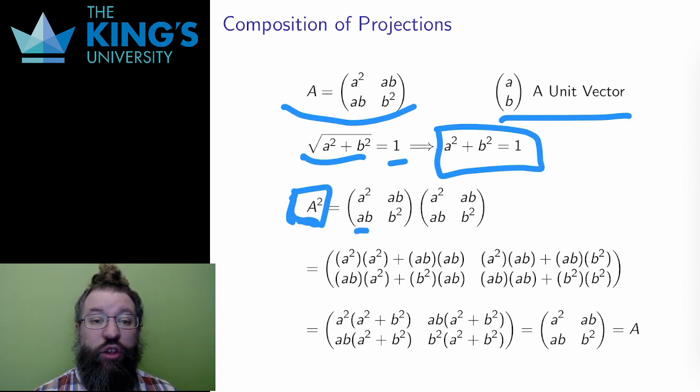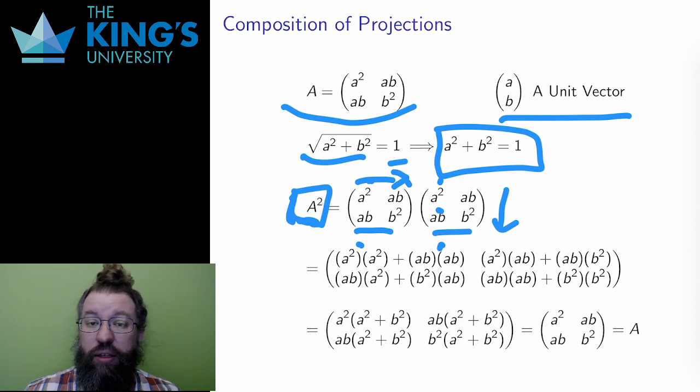I write the matrix twice and do the matrix multiplication. This is a bit tricky, but let me guide you through the calculation. In the first component, going across the first row and down the first column, I get A squared times A squared plus AB times AB. In the second component, going across the first row and down the second column, I get A squared times AB plus AB times B squared. And I get the second row in a similar fashion.